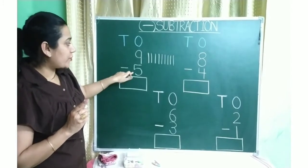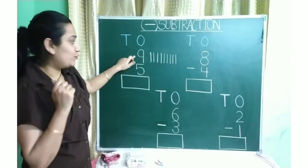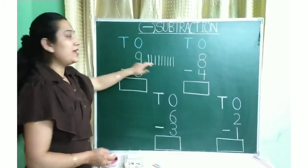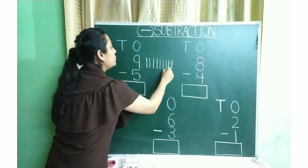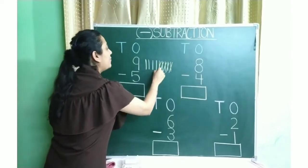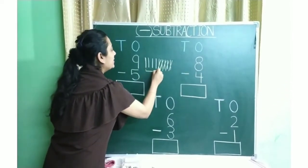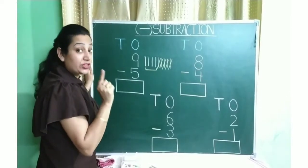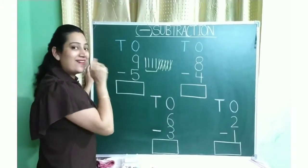So we have to subtract number 5 from number 9. So what we will do? We will cut 5 lines. We will cut 5 lines like this. 1, 2, 3, 4, 5. So how many left? Now we will count the left ones. That will be our answer.